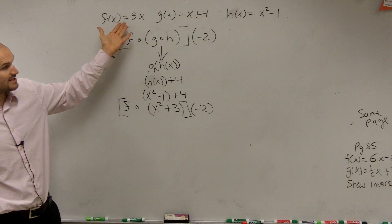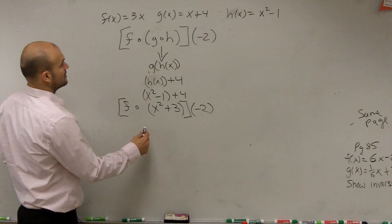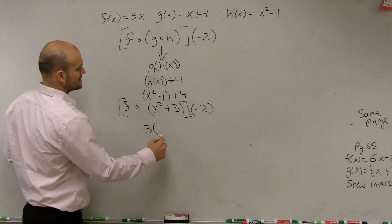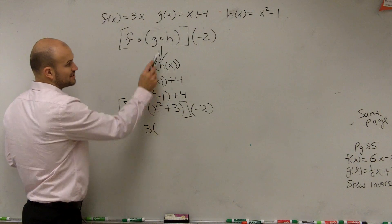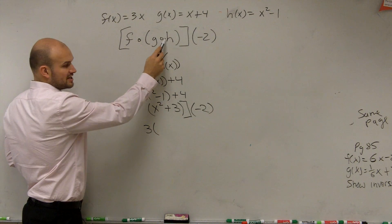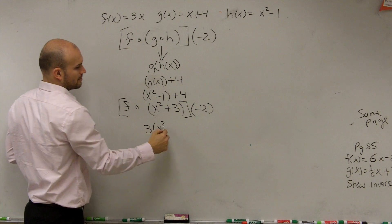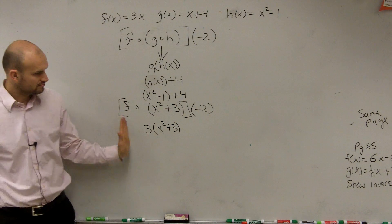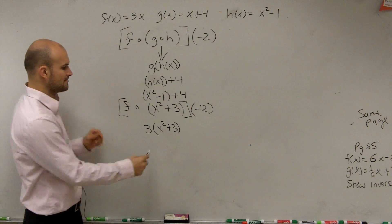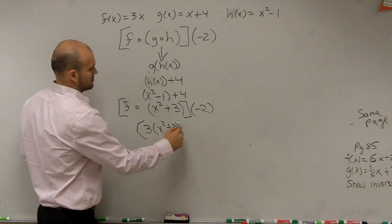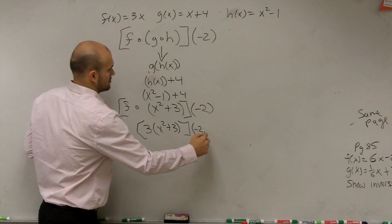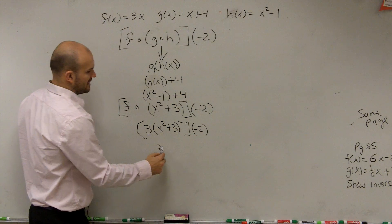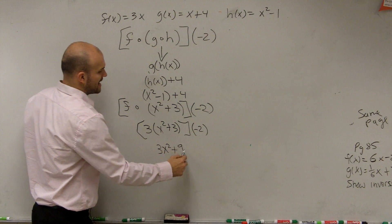So I go up to my f function and say, oh, that's 3x. So I do 3 times whatever my g of h is, which is x squared plus 3. Then I use the distributive property. Therefore, I get 3x squared plus 9.